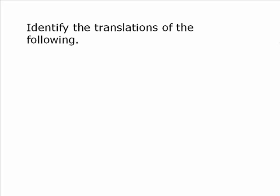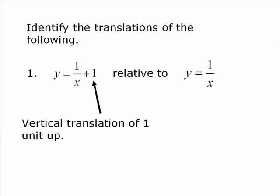So let's identify the translations of the following. So y = 1/x + 1 relative to y = 1/x. This is a reciprocal function. I'm not going to graph it. We've seen quite a few of these. But what I'm concerned about is that plus 1. And that plus 1 indicates a vertical translation of 1 unit up. Because the y was isolated, the positive 1 is telling the truth.